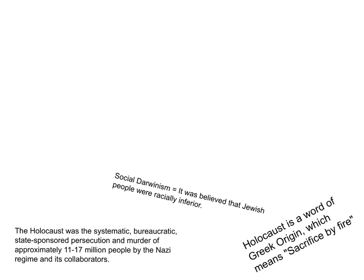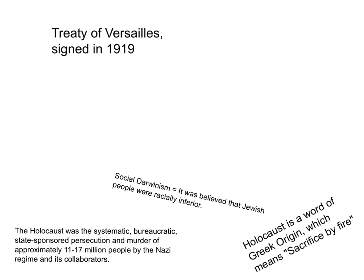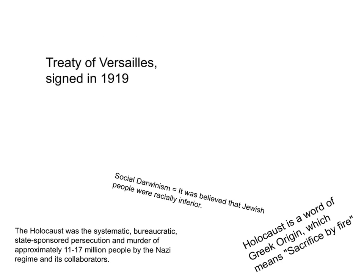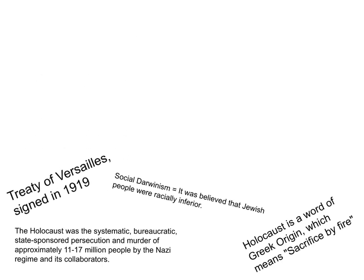We should know that part of the reason this all came about was the Treaty of Versailles, which was one of the peace treaties at the end of World War I. It ended the state of war between Germany and the Allied Powers and was signed in 1919. It caused a lot of Germany's troubles and turmoils during this time. One of the major things that happened was the devaluation of the mark — the mark being their monetary currency.